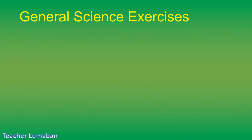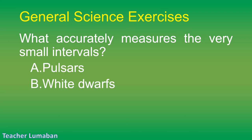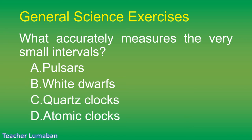What accurately measures very small time intervals? Letter A: pulsars. Letter B: white dwarfs. Letter C: quartz clocks. Letter D: atomic clocks.